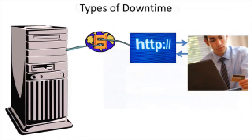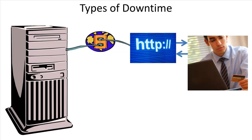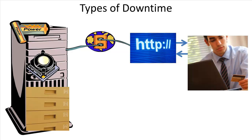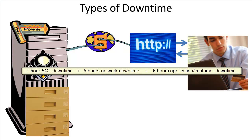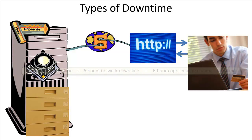Measuring server availability in nines might not reflect the real availability of the overall system. If your SQL Server never went down, does that mean your customers never had a blackout? For example, if your server was down one hour last year but there was also a network outage of five hours, your customers experienced a total outage of six hours. The SQL Server's downtime looks low, but the applications trying to use it perceive a higher level of outage — meaning application availability is another important point of view.